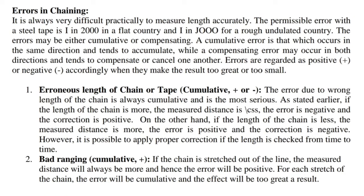Errors in chaining: It is always difficult practically to measure length accurately. The permissible error with a steel tape is 1 in 2000 in flat country and 1 in 1000 for rough undulated country. Errors may be either cumulative or compensating. A cumulative error occurs in the same direction and tends to accumulate, while a compensating error may occur in both directions and tends to cancel out. 1. Erroneous length of chain or tape — cumulative, positive or negative. The error due to wrong length of the chain is always cumulative and the most serious.